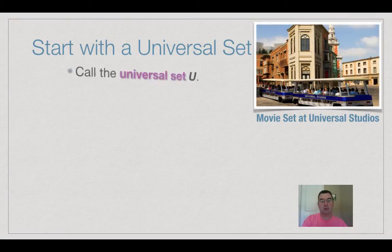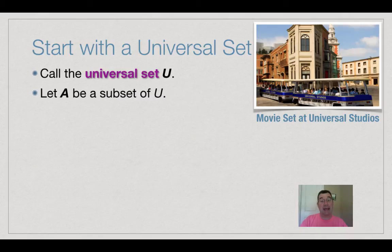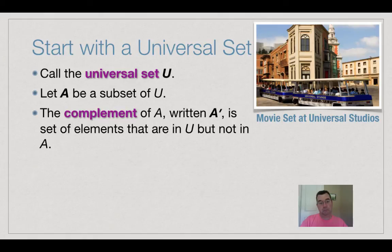So we start with a universal set and we call it U. And then we let A be a subset of that universal set. So the complement of A, which we're going to write as A' with that little tick mark there, we'll call that A'.